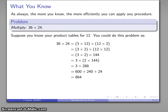36 times 24 is 3 times 2 times 12 times 12, that's 3 times 2 times 144, which is 288 times 3, which is 600, 240, that's 840, plus 48 is 864.